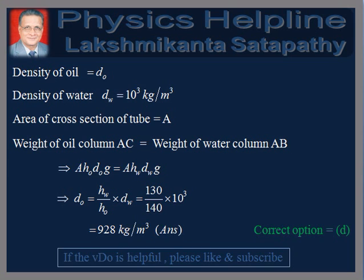Now, the density of water DW is equal to 10 to the power 3 kg per meter cube. Let the density of oil be equal to DO. We are required to find the value of DO. For the pressure on both sides at level A to be the same, the weight of oil column AC should equal the weight of water column AB. If the area of cross-section of the tube is A, then A·HO·DO·g equals A·HW·DW·g, which gives DO is equal to HW divided by HO, multiplied by DW.